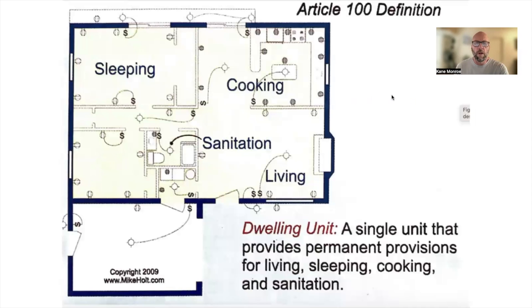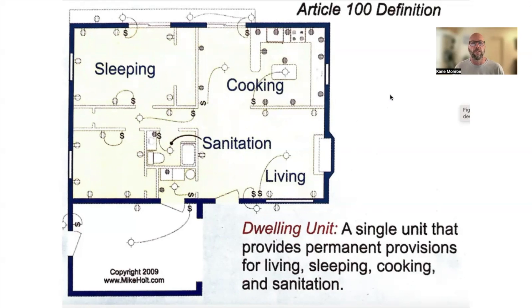First off, in Article 100 we have the definition of a dwelling unit, and it's a single unit that provides permanent provisions for living, sleeping, cooking, and sanitation. That's the definition of a dwelling unit.